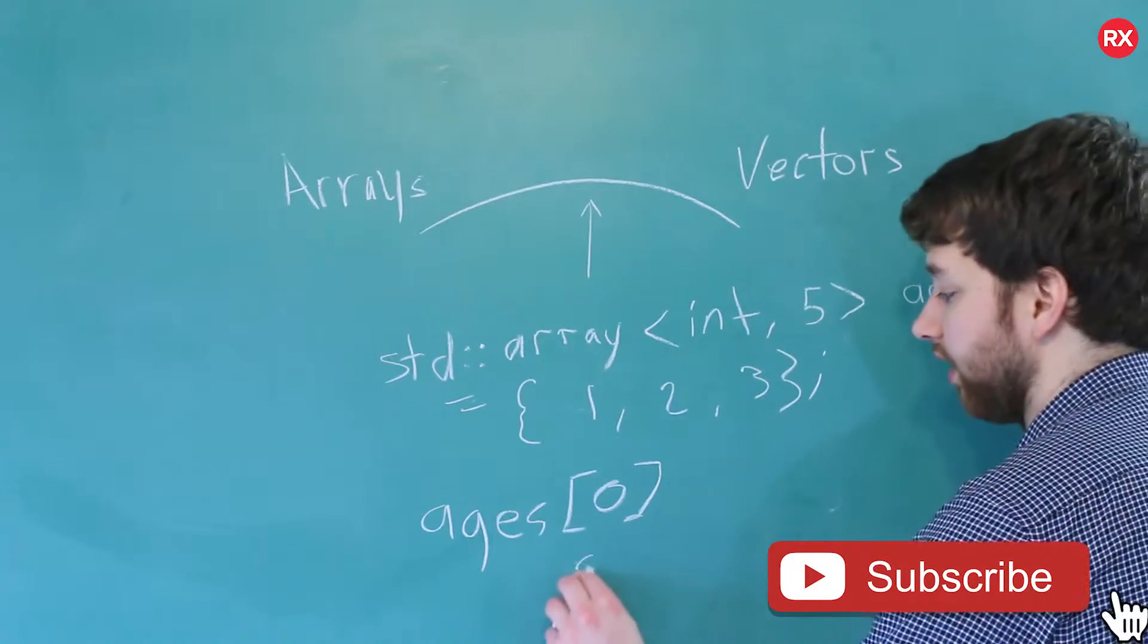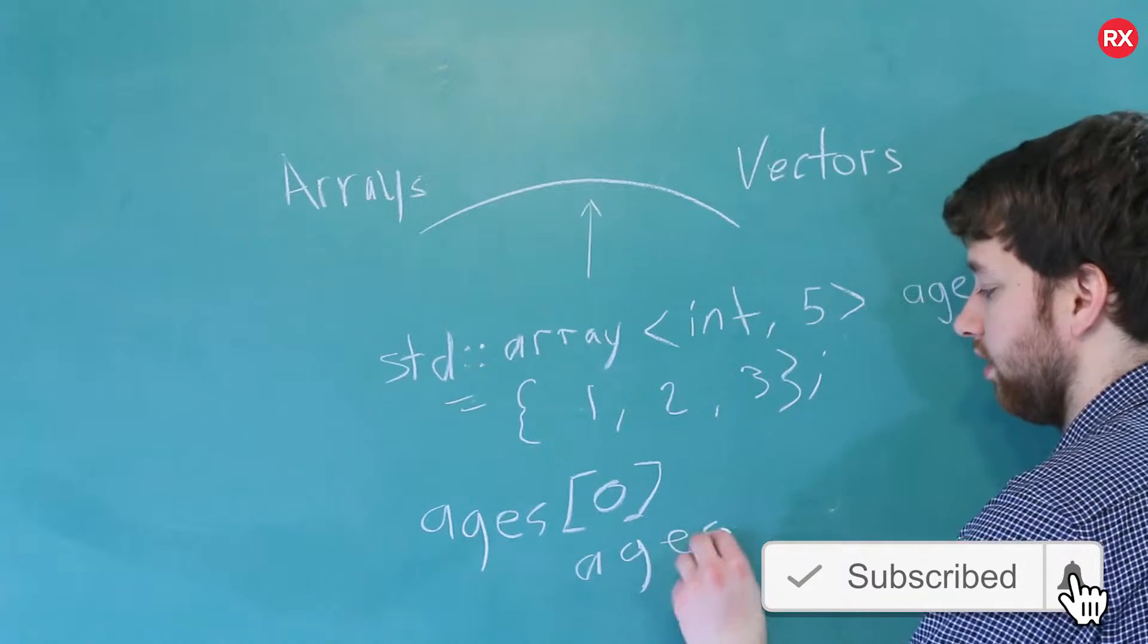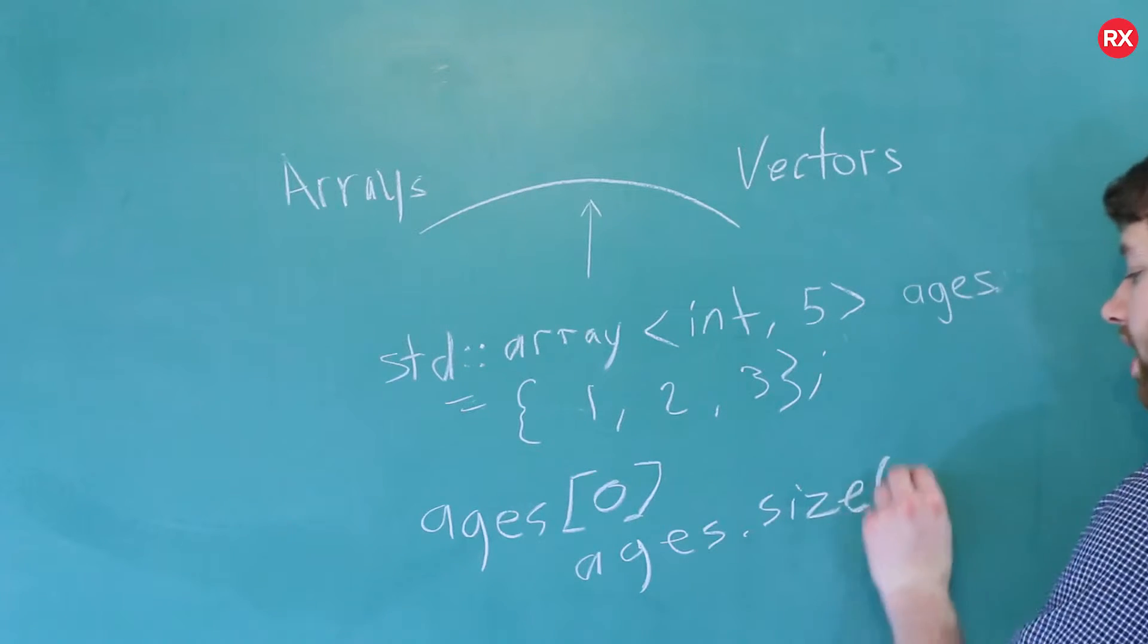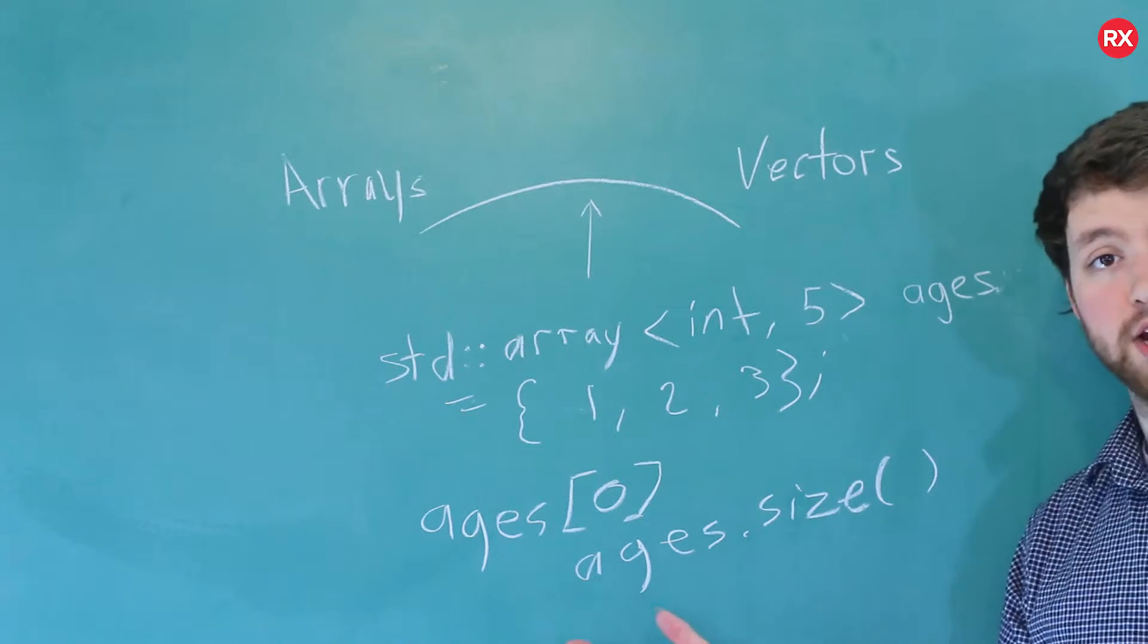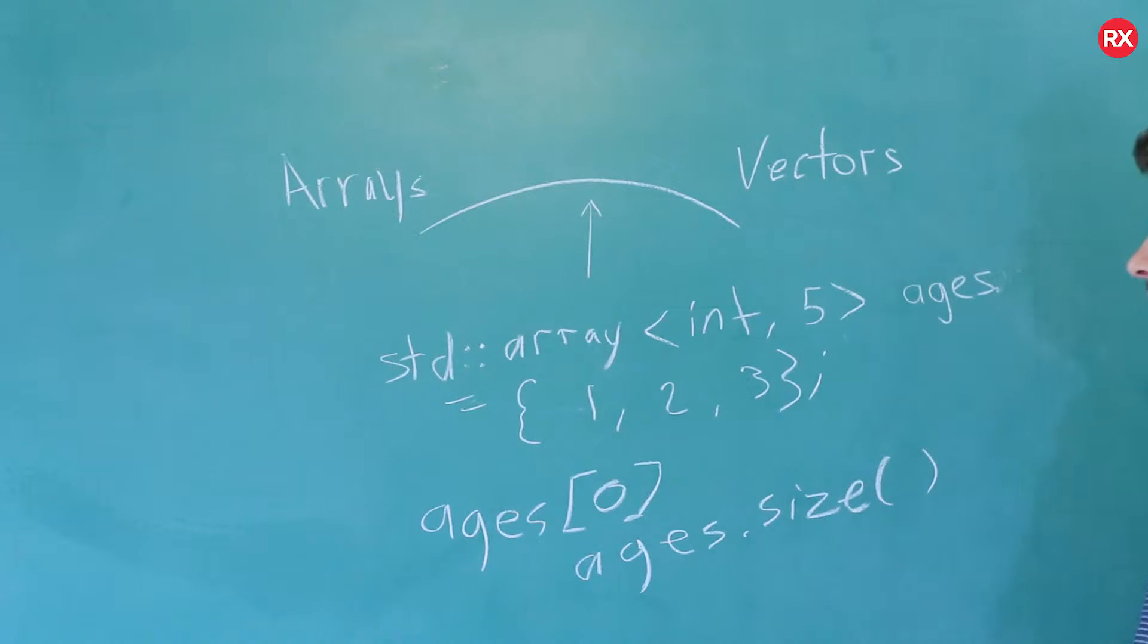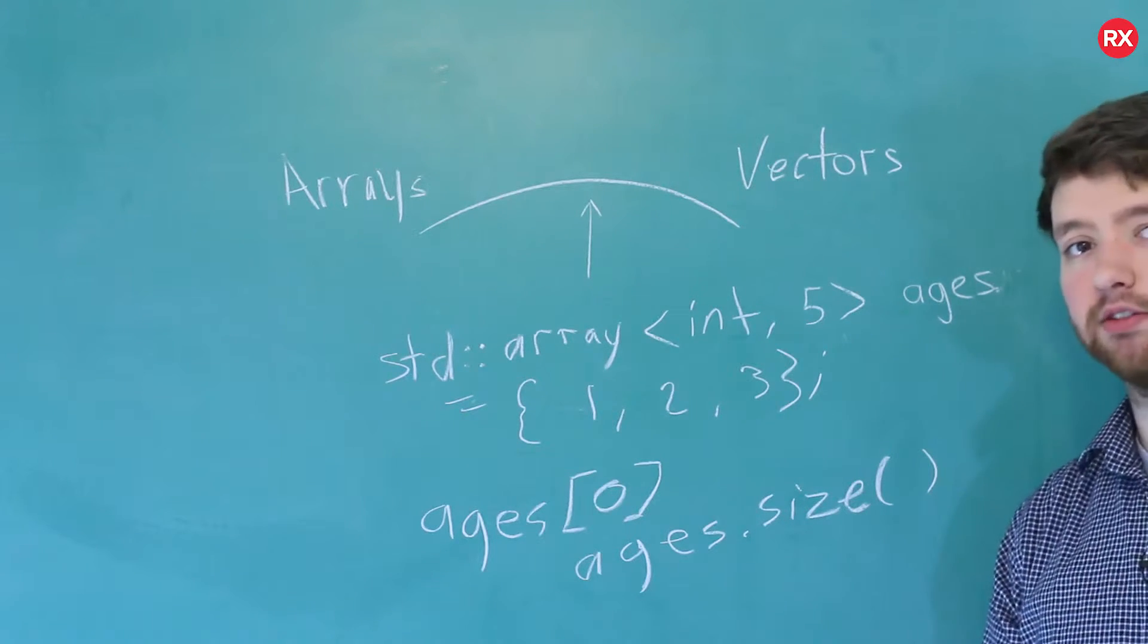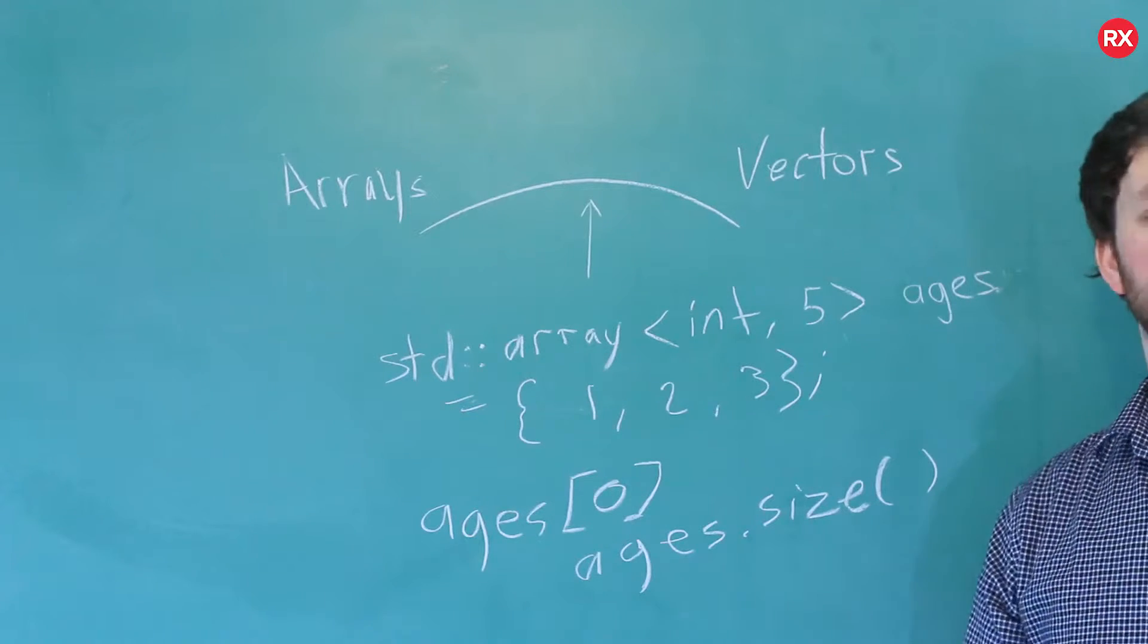Specifically you can do stuff like ages.size() which is a member function, also known as a method, of this ages object which is a templatized array. So this will give you how many elements, in this case it would return three, returns an integer so you can output it or you could pass it to another array or just use it as if it was any integer.